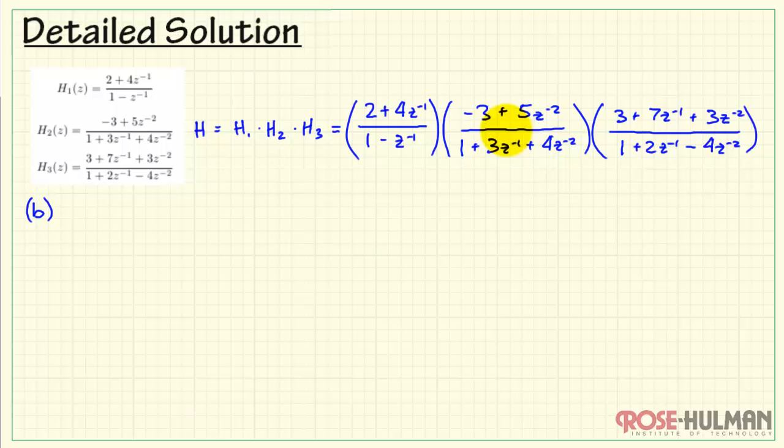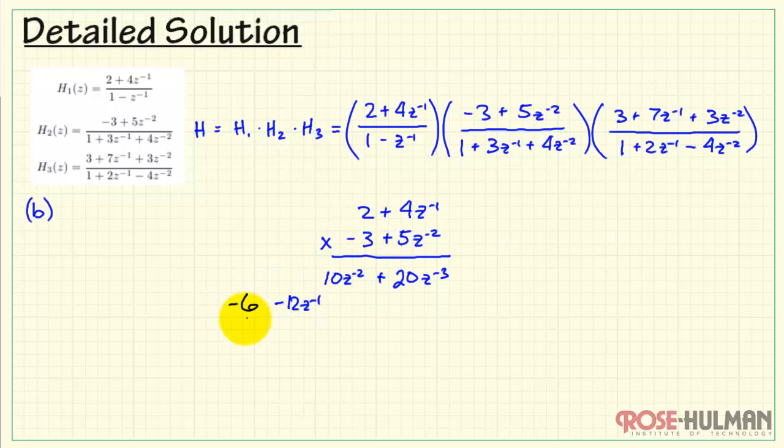To get a single polynomial in the numerator, we need to multiply out these smaller polynomials. Let me begin with the first two. I'm applying polynomial multiplication. Here we would have 20 times z inverse cubed, and then we have 10 z inverse squared. Here I have minus 3 times 4z inverse. Notice that I'm skipping a z inverse term, so that's why I'm shifting this over two places instead of just one. Now we add column wise. We have minus 6, minus 12 z inverse, plus 10 z inverse squared, plus 20 z inverse cubed.